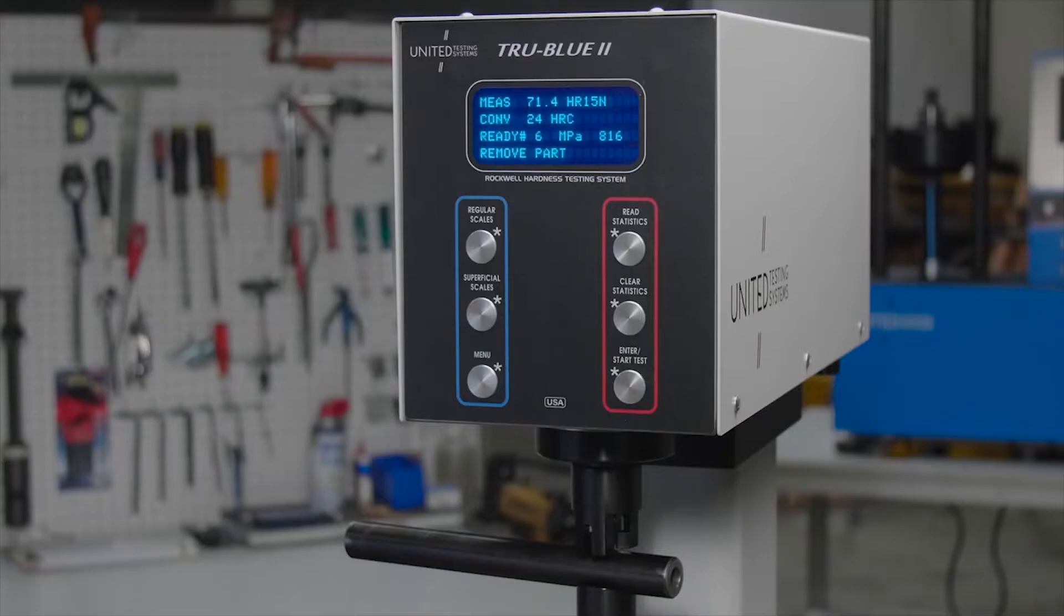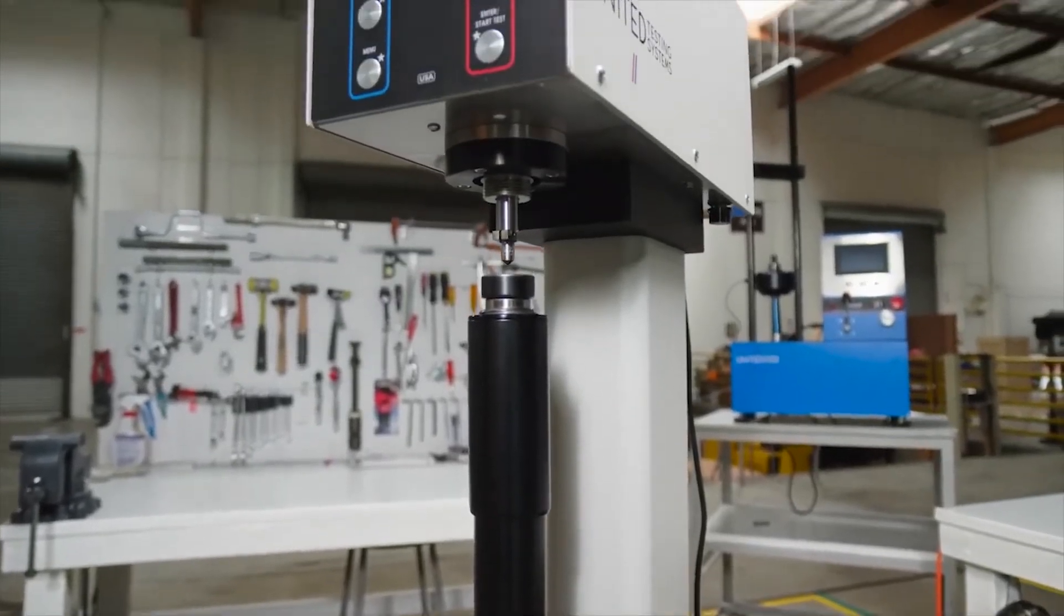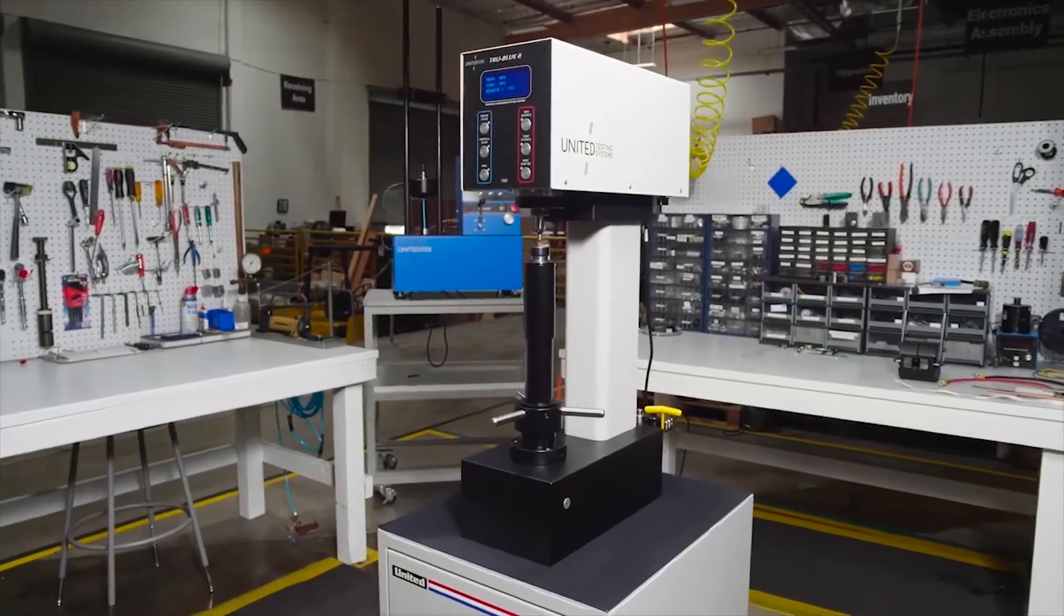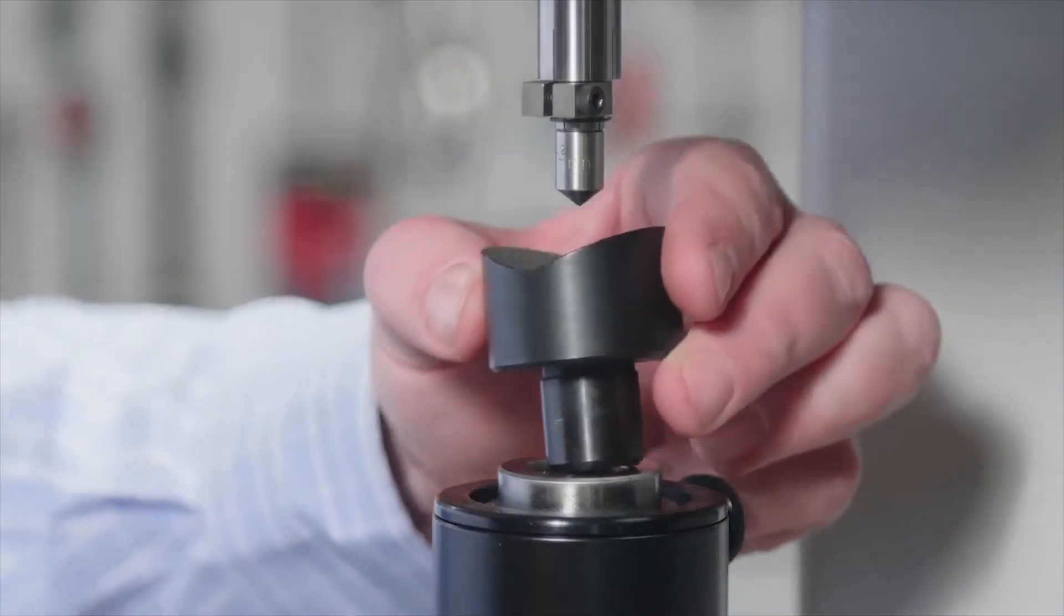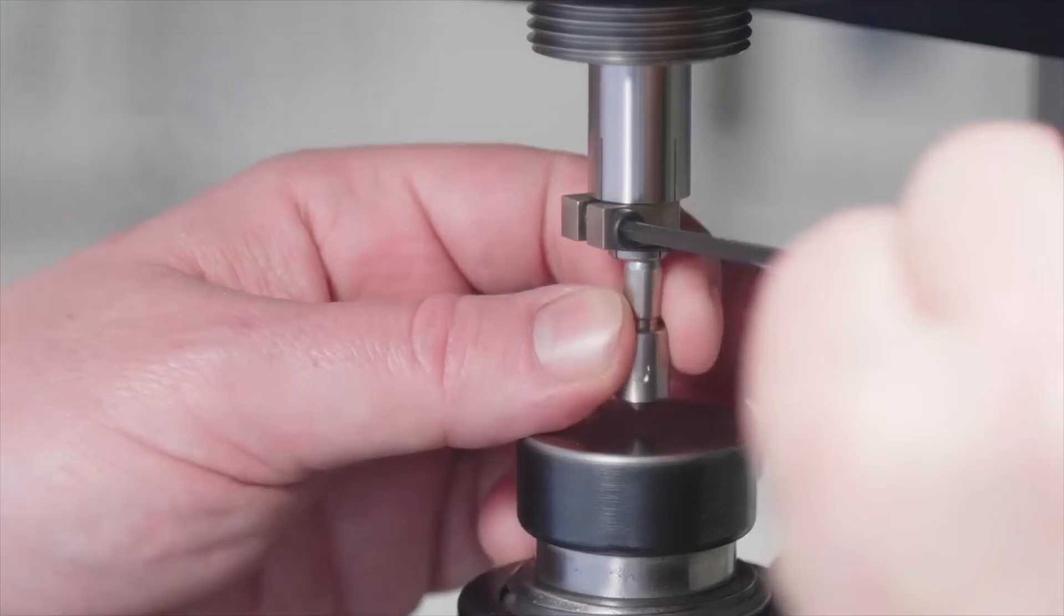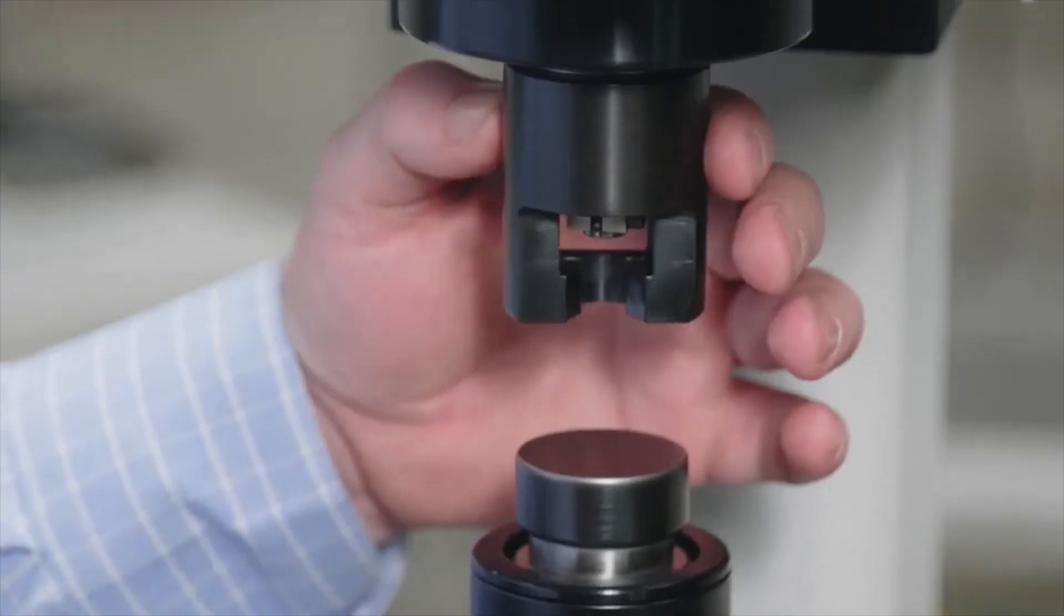Available in a variety of heights and depths, the True Blue 2 is designed to accommodate a wide variety of parts and components. If a standard system does not accommodate your part or components, United will design a custom hardness tester to meet your specific needs.